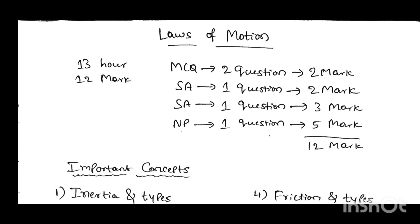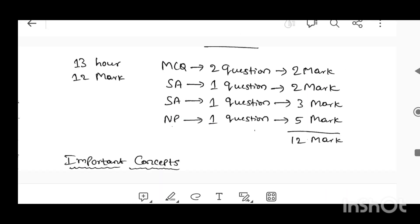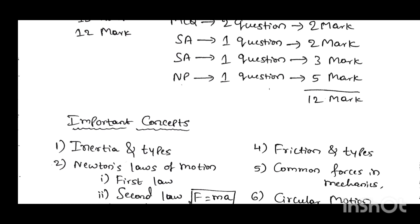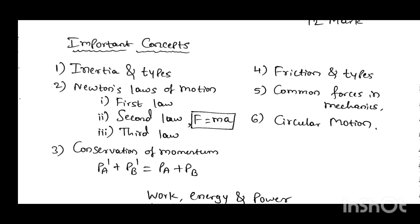First I am going through the chapter Laws of Motion. In this chapter the total allotted hours is 13 hours and the allotted marks is 12 marks. This 12 marks is distributed in several sections. First, from this chapter you are going to get two MCQ questions, each carrying one mark, two essay type questions, one for two marks and another for three marks, and one numerical problem.